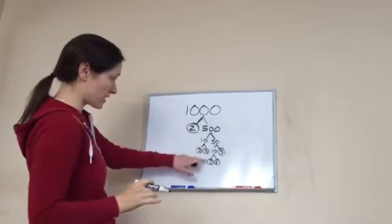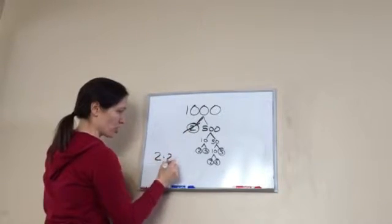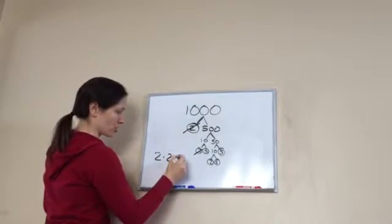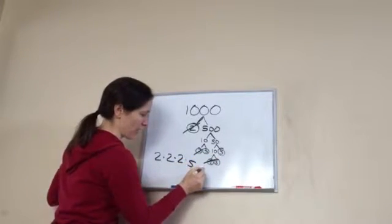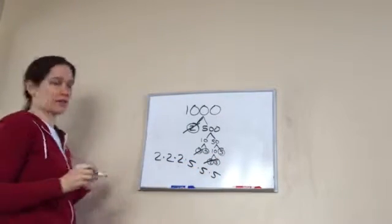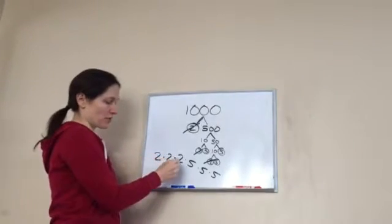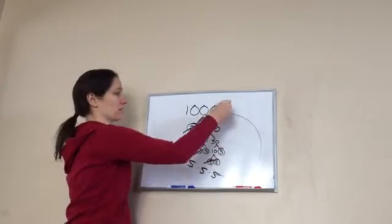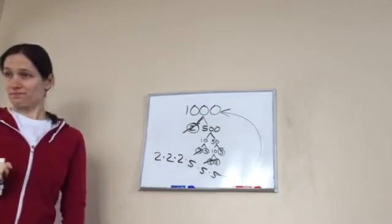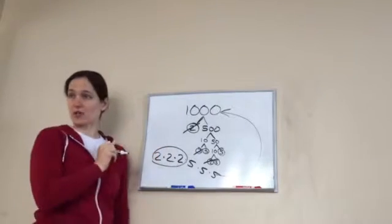Okay. So, now I'm going to write all of these numbers in order. 2 times 2 times 2 times 2. And then there's three 5s. Times 5. Times 5. Times 5. Sorry, I wrote it. Okay. Okay. So, 2 times 2 times 2 times 5 times 5 equals 1,000, right? Okay.